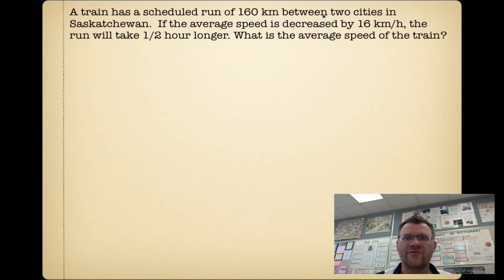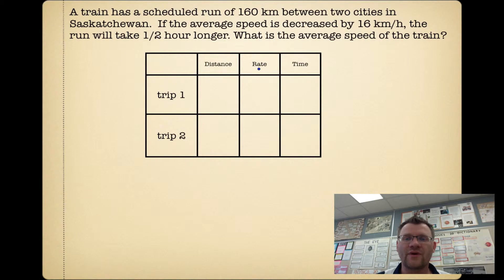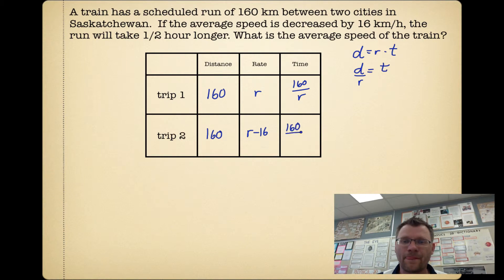A train has a scheduled run of 160 kilometers between two cities in Saskatchewan. If the average speed is decreased by 16 kilometers an hour, the run will take half an hour longer. What is the average speed of the train? Here we have another table using distance, rate, and time. We know that distance equals rate times time. In the first case, our distance traveled is 160 kilometers. The rate we're going to call r, because that's what we're trying to find. The time is going to be distance divided by your rate, which is 160/r. Our second trip is still 160 for the distance. The rate is going to be 16 kilometers less, so it's r - 16. And that means our time is going to be 160/(r-16).